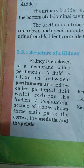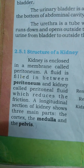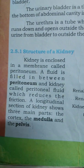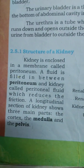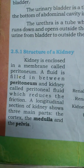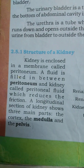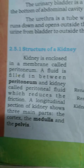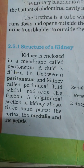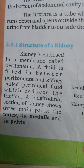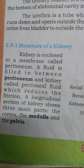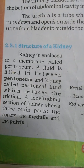There is a hilum in the center of the kidney's concave surface, where the renal artery, renal vein, nerve, and ureter are connected. The membrane that encloses the kidney is called the peritoneum, and between the peritoneum and the kidney there is a fluid called peritoneal fluid, which reduces friction.